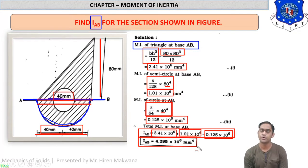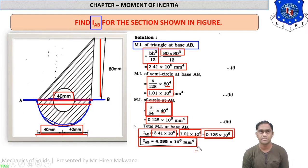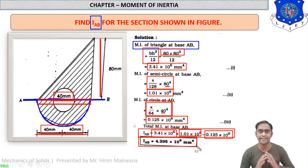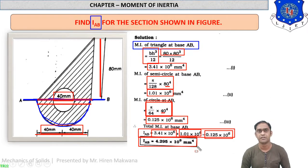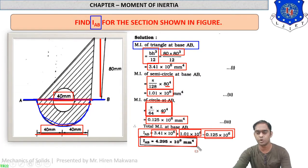Practice is very important in moment of inertia, especially calculator practice as the calculations can be tough. These are the two basic methods: first, moment of inertia about the central axis (requiring CG calculation); second, moment of inertia about any other given axis (using direct formulas). This is part of your mid-sem exam syllabus. Go through all videos from lecture number one to lecture number 32 and ask for any doubts. Thank you and best of luck students.